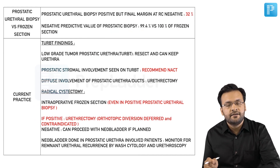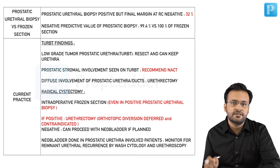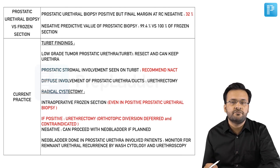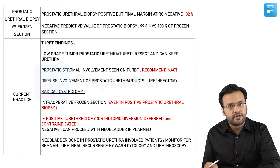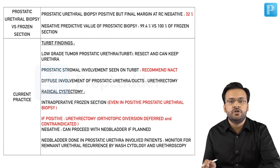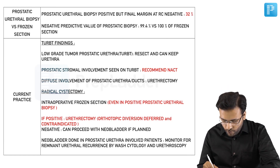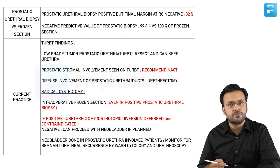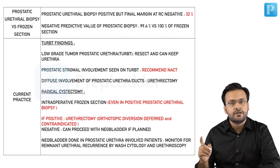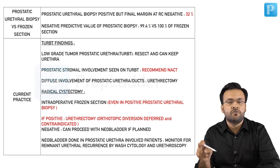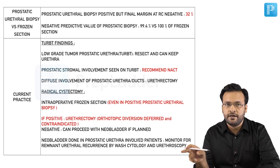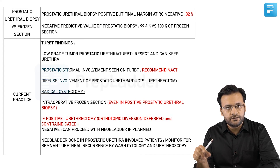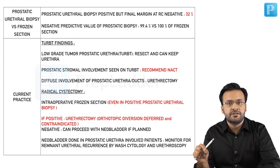In patients with prostatic stromal involvement, the patient should be counseled about the high risk of urethral recurrences, but prostatic stromal involvement is not an absolute contraindication for neobladder formation. If a patient insists on neobladder and refuses urethrectomy, they can have diversion with neobladder, but the remnant urethra must be monitored for recurrence with cytology and urethroscopy. The only absolute contraindication in relation to urethral findings for a neobladder is a positive urethral apical margin at the time of frozen section.